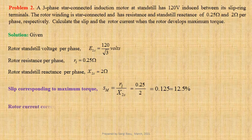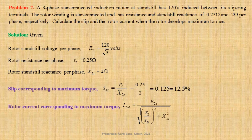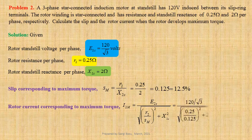Expression for rotor current corresponding to maximum torque: I2M equals E2S divided by root over (R2 by SM) squared plus X2S squared. Using values we get 120 by root 3 divided by root over (0.25 by 0.125) squared plus 2 squared, that gives us 24.4949 ampere.